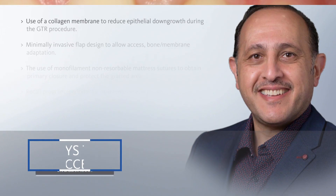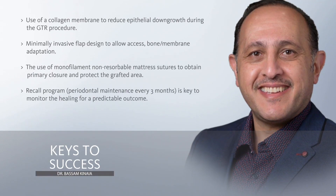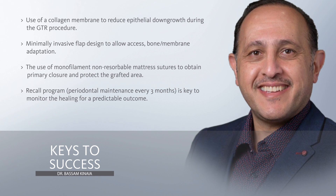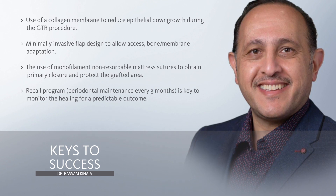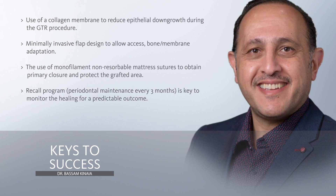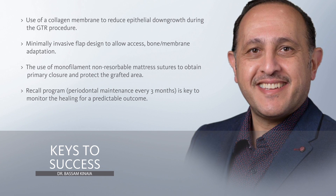The keys to success for this GTR procedure for this patient were the use of a collagen membrane together with the Valomix to prevent against epithelial downgrowth during the GTR procedure. The minimally invasive flap design and instruments with the microsurgical plate were key to preserve the remaining tissue and allow access for good bone and membrane adaptation.